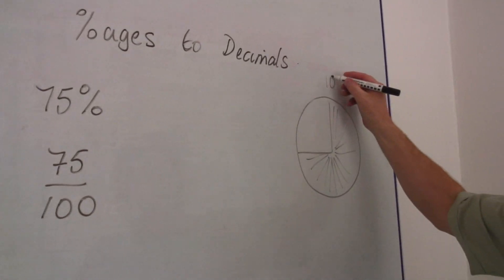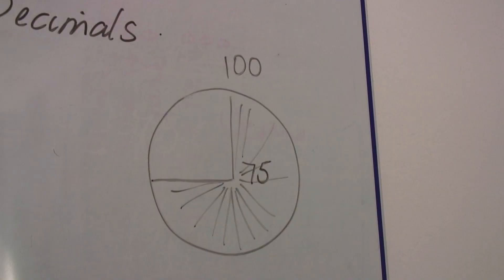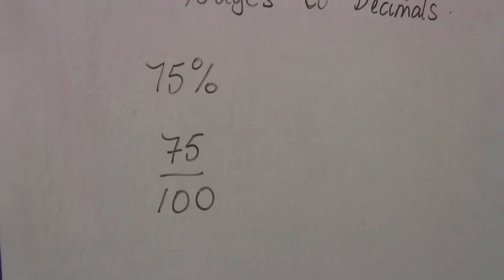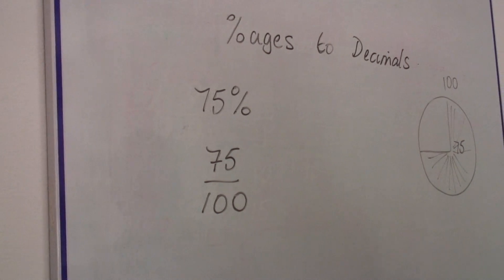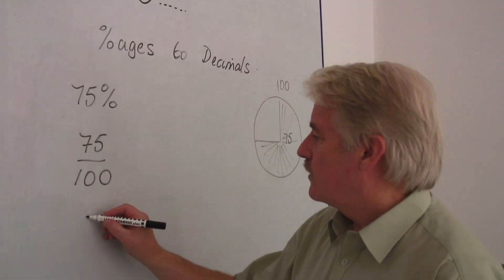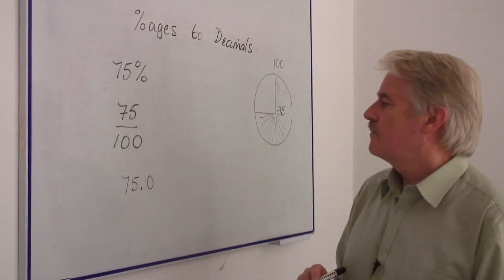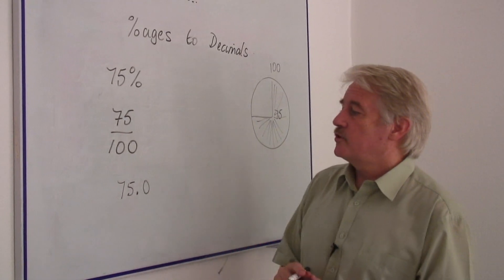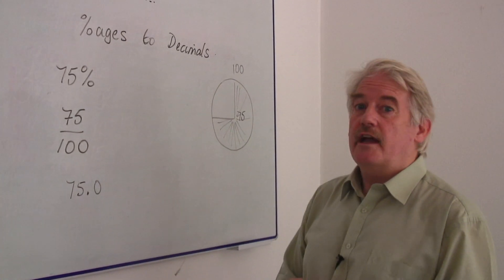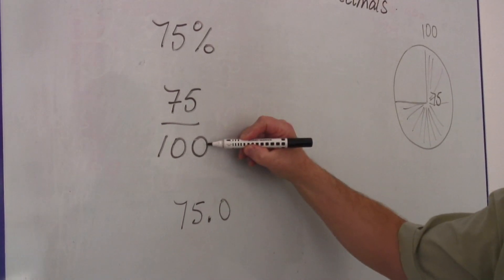Of 100 parts, it's the 75 parts here. So what I know is I can write it as 75 divided by 100. And that is a fraction. Now to turn it into a decimal, if I write 75.0 for the moment. Now all I have to do to turn it into a decimal is to move the decimal point because I've got to divide by 100.